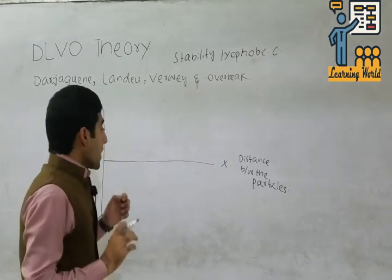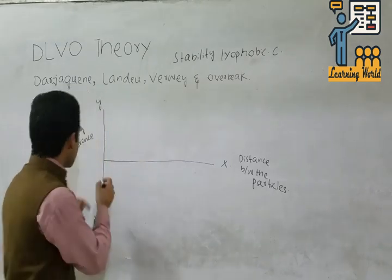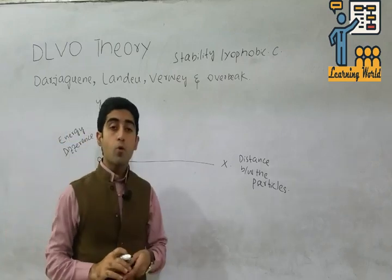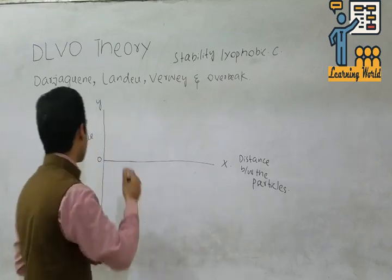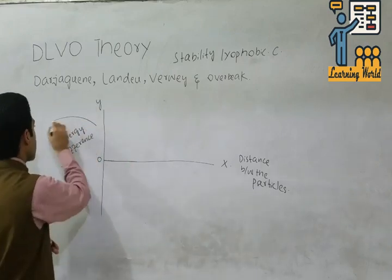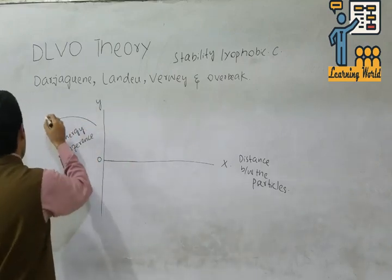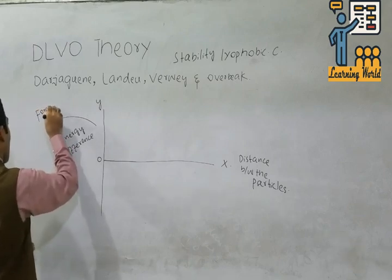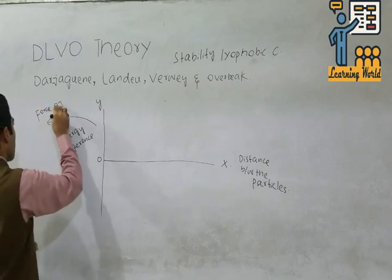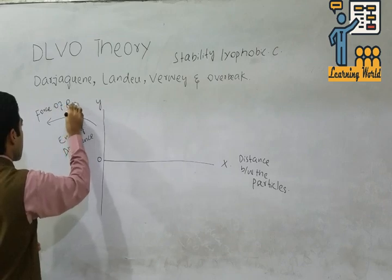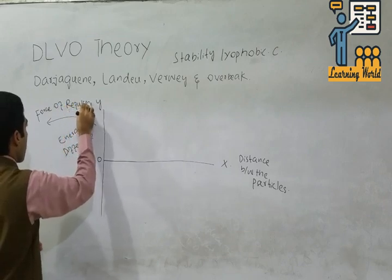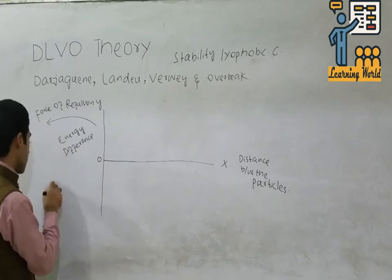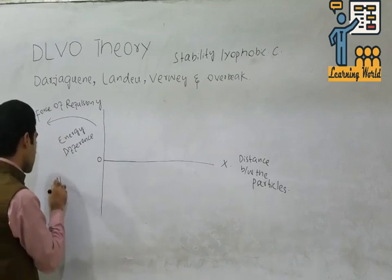Above the zero point, this line represents the force of repulsion. Below the zero point, this line represents the attractive forces.